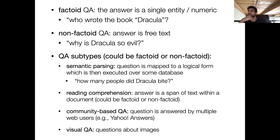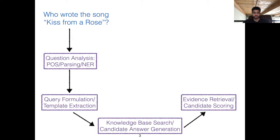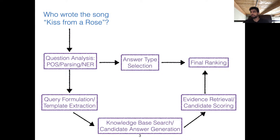On answer types and standard categories: it really just depends on who is designing the system and what kind of supervision they have. In factoid QA where many answers will be entities, it makes sense to use a categorization like people, places, organizations, or objects. Different datasets have different levels of categorization and granularity — it depends on who's designing the system, how many resources they have, and how much effort they're willing to put into labeling the answers.